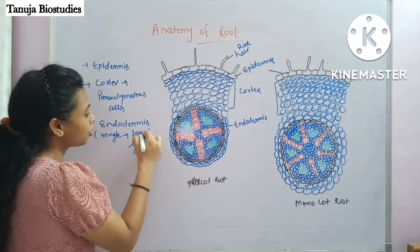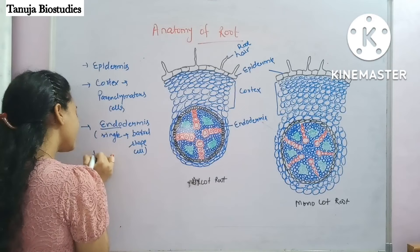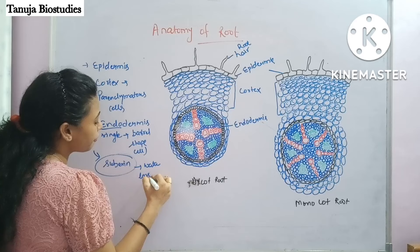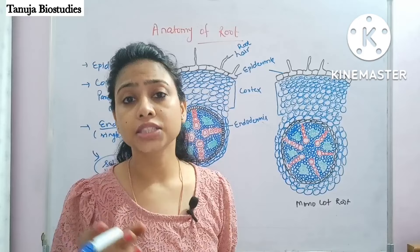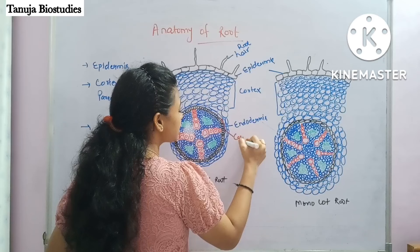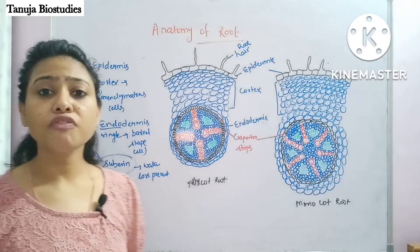On the endodermis there is a substance deposition — that is suberin. Suberin is water resistant, so it prevents water from entering quickly. This deposition forms a stripe called the Casparian stripe. There is a waxy layer of suberin present on the surface of the endodermis.